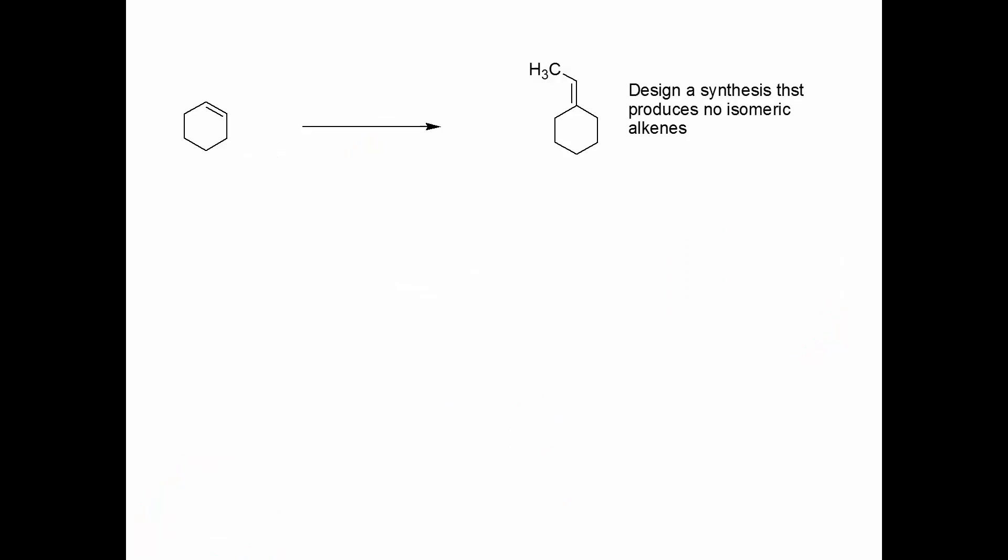All right, let's look at a synthesis problem that involves the Wittig reaction. Design a synthesis that produces no isomeric alkenes of this compound here. And this little phrase produces no isomeric alkenes is often a cue to use the Wittig reaction. Because other methods we know like dehydration and dehydrohalogenation for making carbon-carbon double bonds have this deal where they follow Zaitsev's rule and you get the more substituted one, or if it's in a cyclic system, stereochemistry can also control where it ends up.